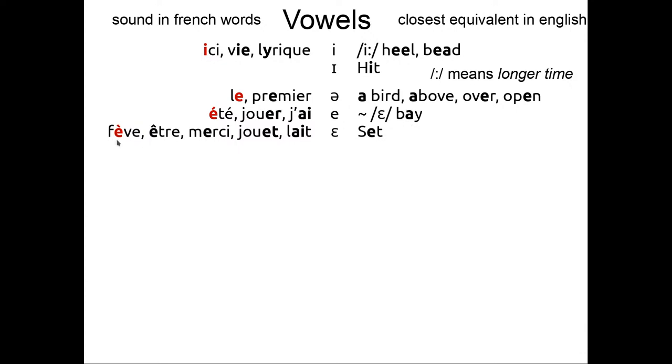Then, if the accent is in the opposite direction, if it's a grave accent, the sound is not été, the sound is être, like in set. In words like fève, être, merci, jouet, lait. As you can see, in jouer or j'ai, or jouet or lait, two letters can be for one sound.